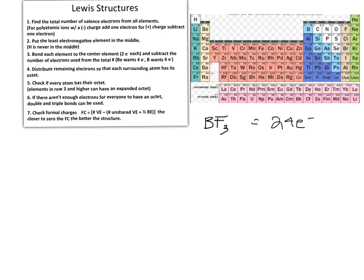We put the least electronegative element in the middle when creating our structure, following rule number 3. We put all the other elements around the outside — the remaining atoms. We bond each exterior atom to the central atom. So we've used a total of 6 electrons, and we subtract that 6 from our total valence, leaving us with 18.